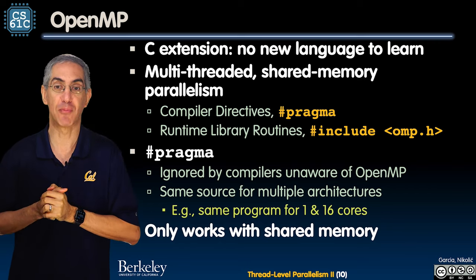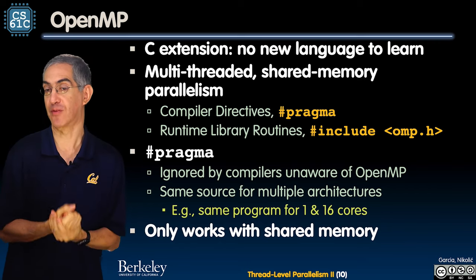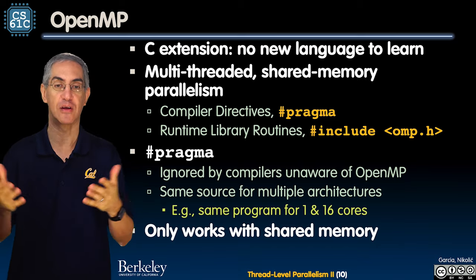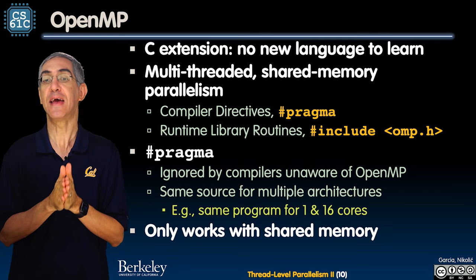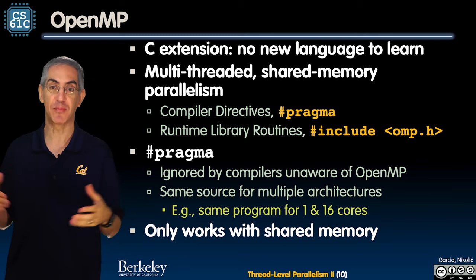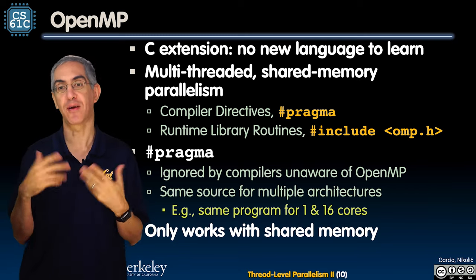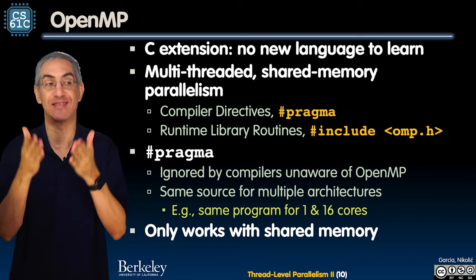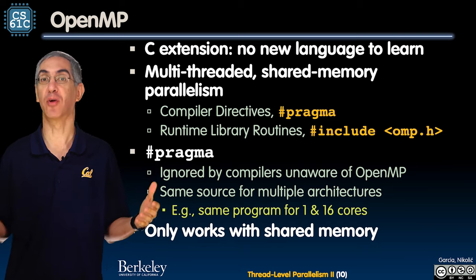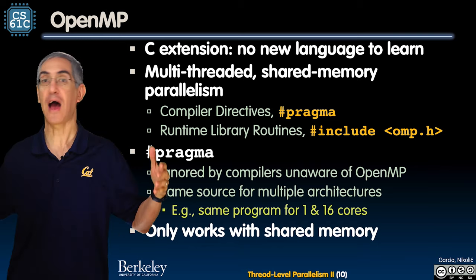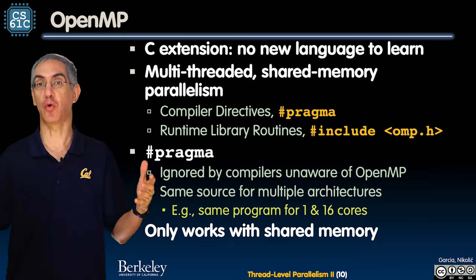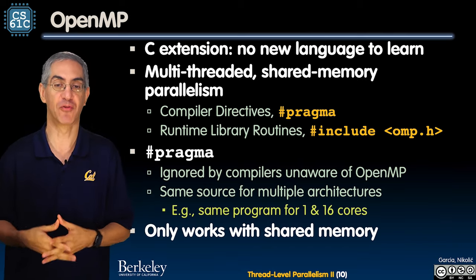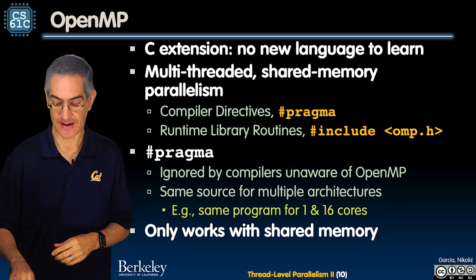It's multi-threaded, shared memory parallelism. You add a compiler directive with the pragma, you've got runtime libraries with header files. Here's the nice thing: any pragma you have is ignored by compilers who don't know about OpenMP. It's the same source code for multiple architectures - one core, 16 cores, hyper-threading on or off, 28 cores - doesn't matter, same source code will just work.